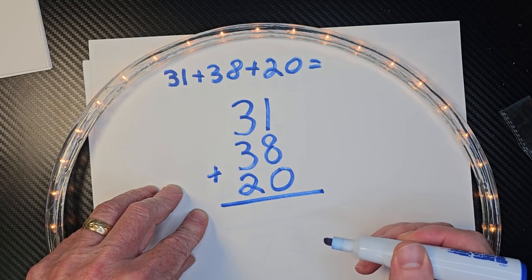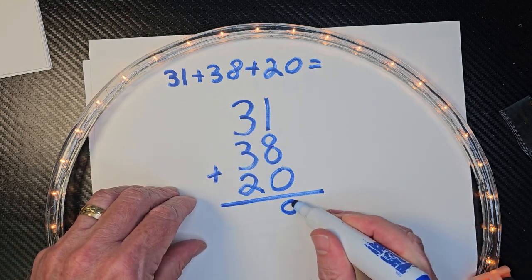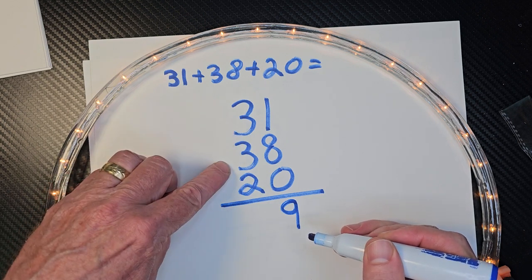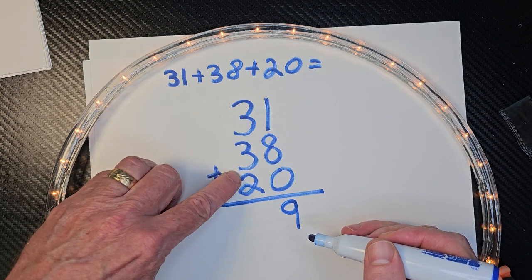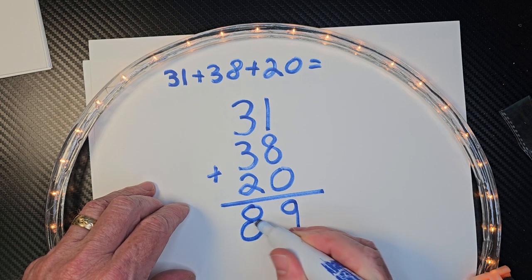And then I'm going to add that. So I have 8 plus 1 is 9. And then 3 plus 3 is 6. And then 7. And then 8. All right.